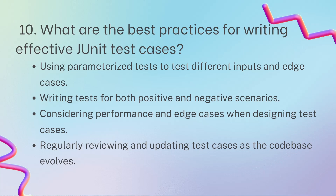Use parameterized tests as we just covered. Write tests for both positive and negative scenarios — in a JUnit interview, mention that you test happy and sad scenarios. Consider performance and edge cases — this is very important. Always think about corner cases. For example, when testing a Math function, don't forget to consider negative numbers or zero as inputs, as these are common edge cases.